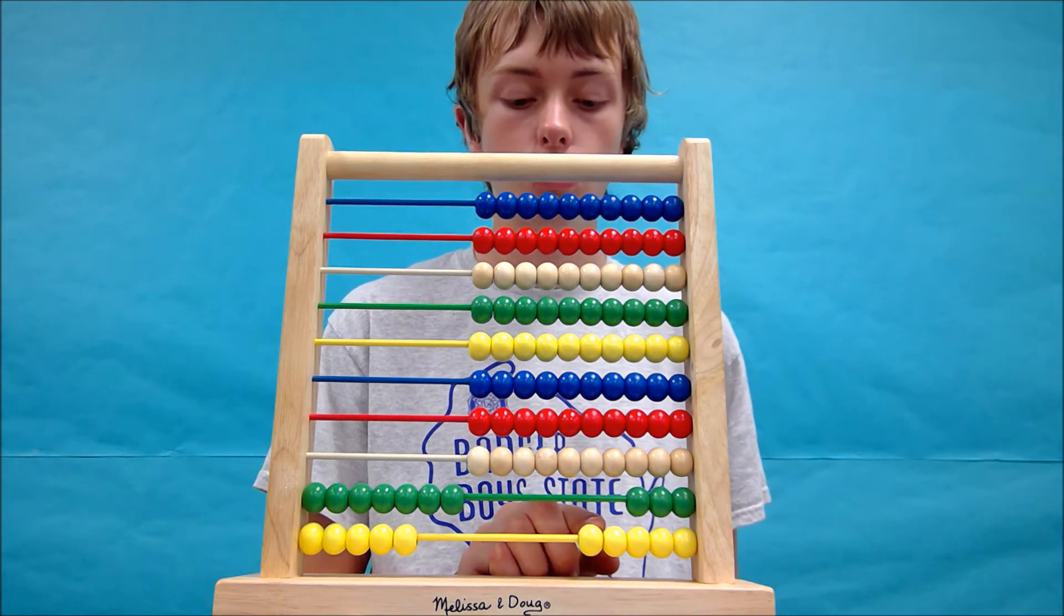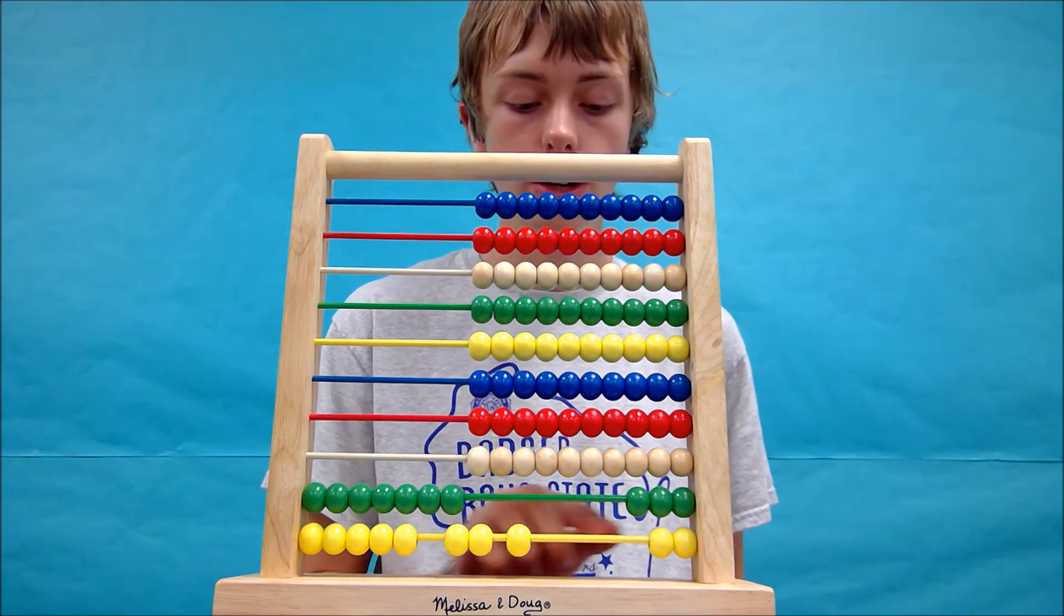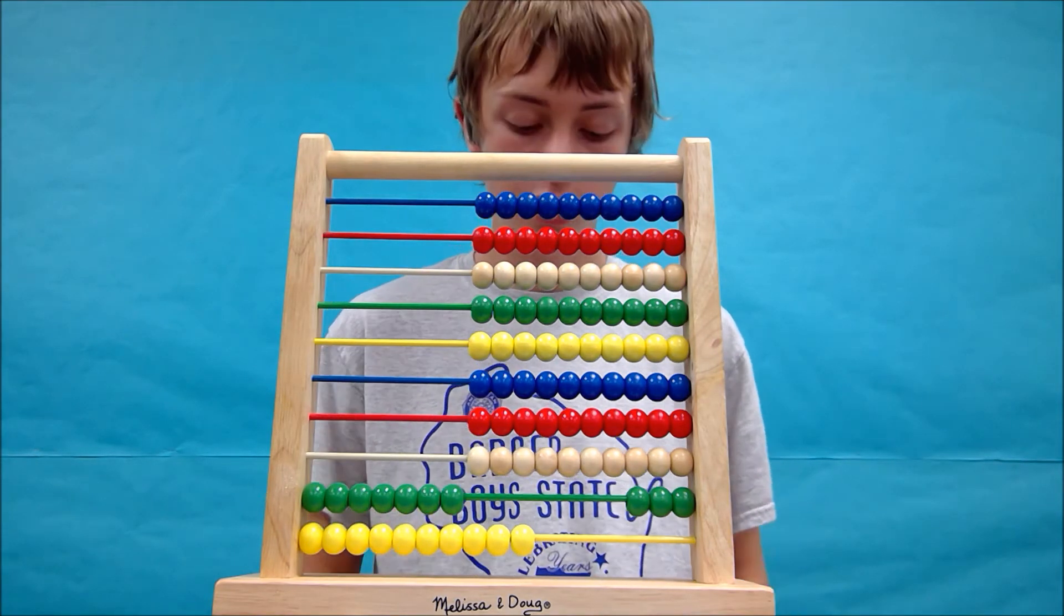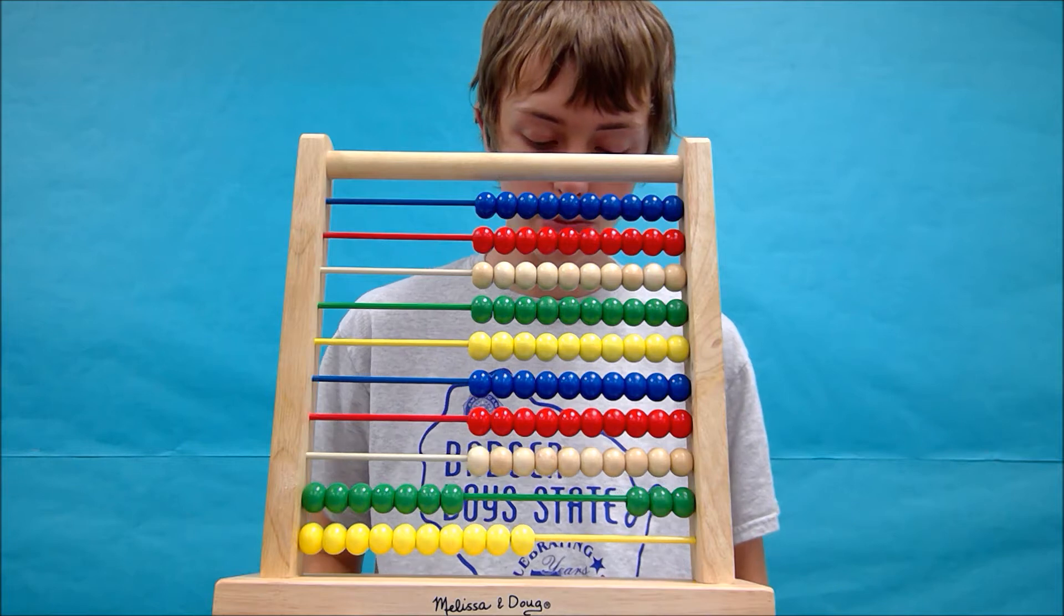So I'm going to count off beads in the ones row. One, two, three, four, five. I will write down the number five on my sheet of paper so I can remember it for later.